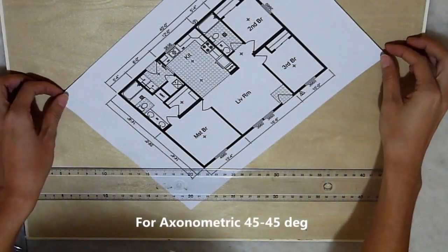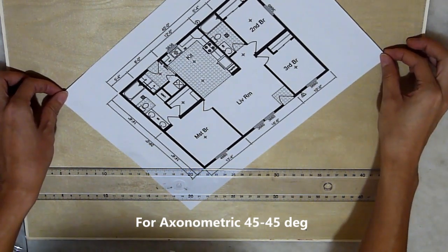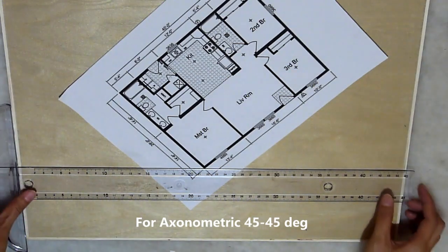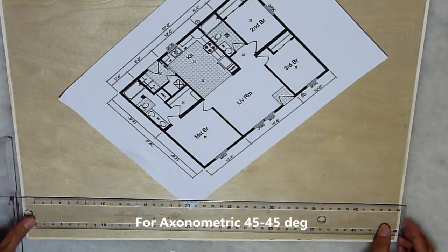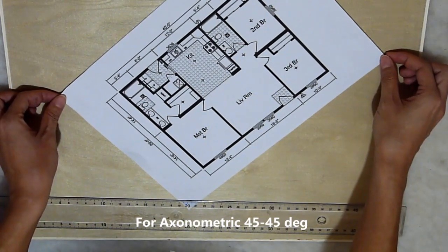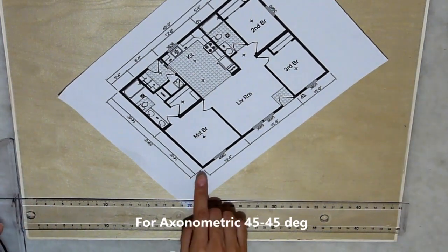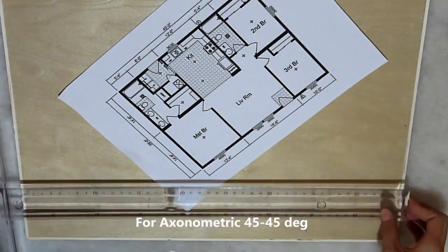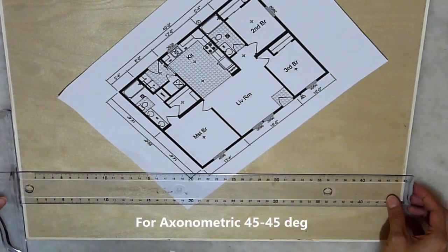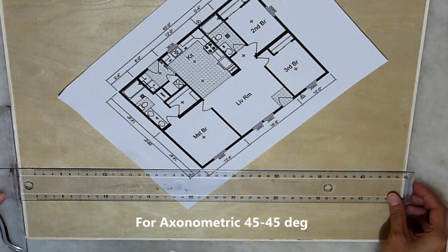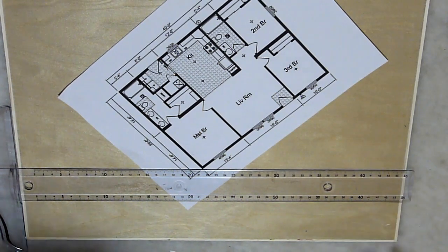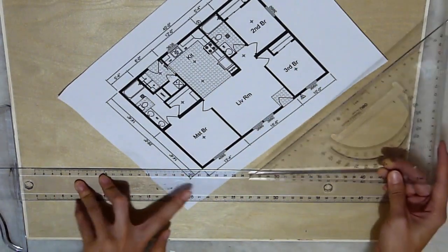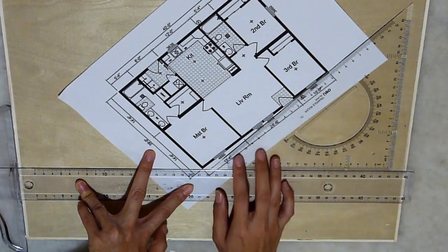Now I'm going to attempt to place this plan at an axonometric 45-45. So for a 45 degree angle, you place the plan like so with the corner facing downwards. And you push up your t-square to meet the corner. And once you have done that, you take a ruler with a 45 degree angle and just slide it across like that.